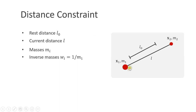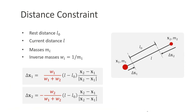Let's start with a very simple constraint: a distance constraint. Let's assume we have two particles at position x1 and x2, a rest distance L0, and the current distance L. The particles have masses M1 and M2. We use the letter W to represent 1 over the mass. In position-based dynamics, we simply move the particles such that the distance constraint L equals L0 is satisfied. Here are the two equations for the correction vectors delta x1 and delta x2. We compute the vector from x1 to x2 normalized, multiply it by the error L minus L0, and distribute the error according to the inverse masses of the particles. If one particle is attached to a wall, we assign a mass of infinity, which corresponds to W of 0, so that particle is not moved at all.